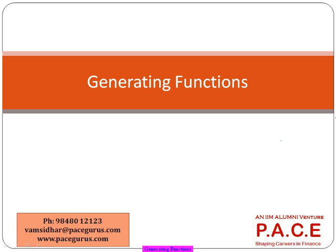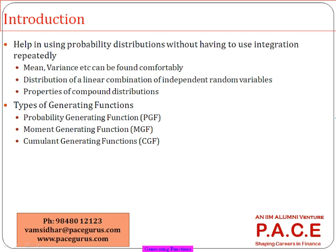These functions work like a kind of iterative formula which helps us in finding out the mean and variance associated with the data. For continuous distributions, we have been using integration very heavily in earlier chapters. But once you are able to generate a function, after that you don't need to do any kind of integration to find out the mean, variance, etc.